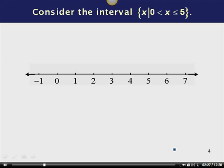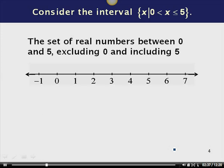Now let's consider the interval given in set builder notation: x such that 0 is less than x, which is less than or equal to 5. This is the set of real numbers between 0 and 5, excluding 0 and including 5. To graph this, I put x on the number line. I want to exclude 0, so I put an open circle at 0. But I'm including 5, so I put a filled-in circle at 5, then shade all real numbers in between.